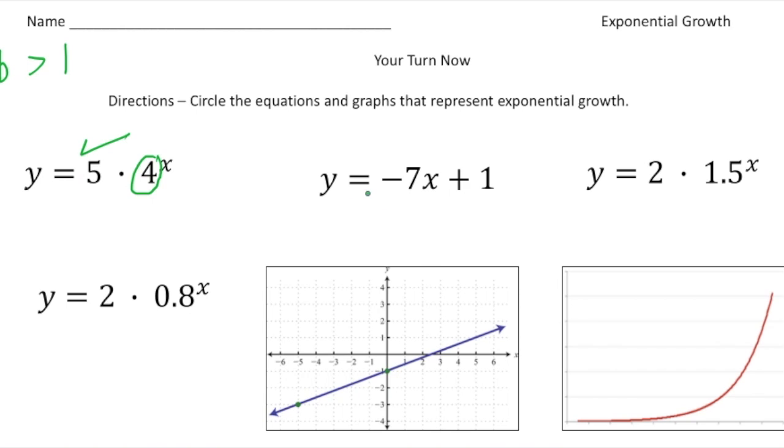The next one, y equals negative seven x plus one. That's linear. So this is absolutely not what we're looking for. Here we have y equals two times 1.5 to the x power. And this b value is more than one. So this is one, yes.